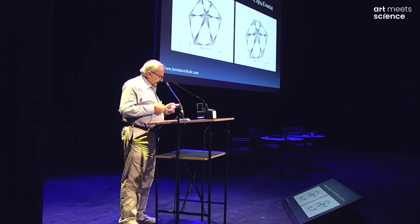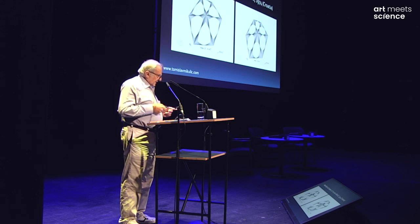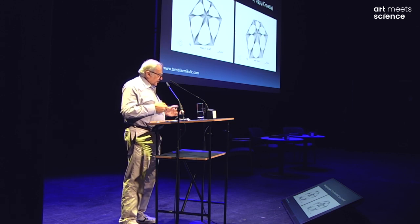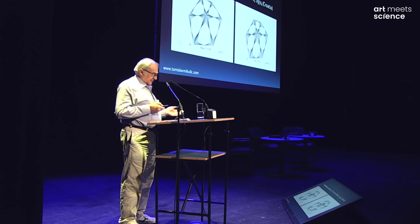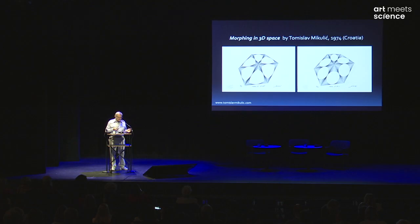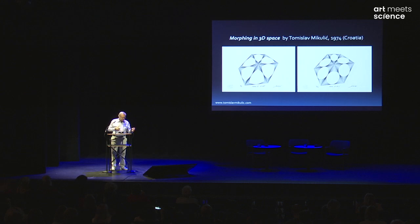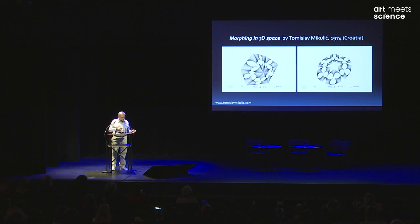That morphing goes from zero — which means nothing morphed, it's a pure triangle — to halfway through to circle, full way through to the circle, or all the way through to the middle point.